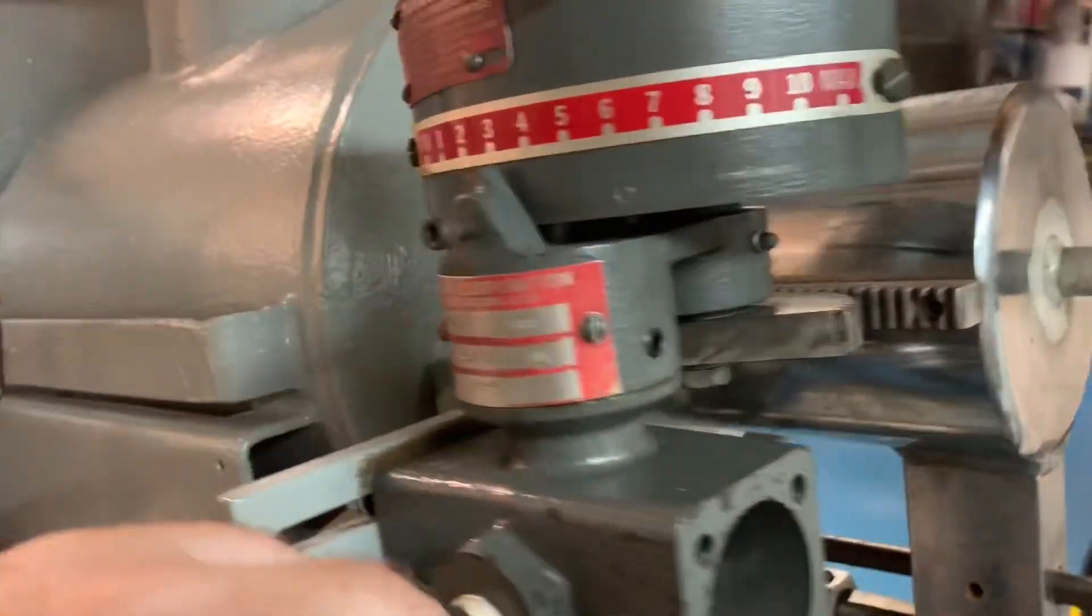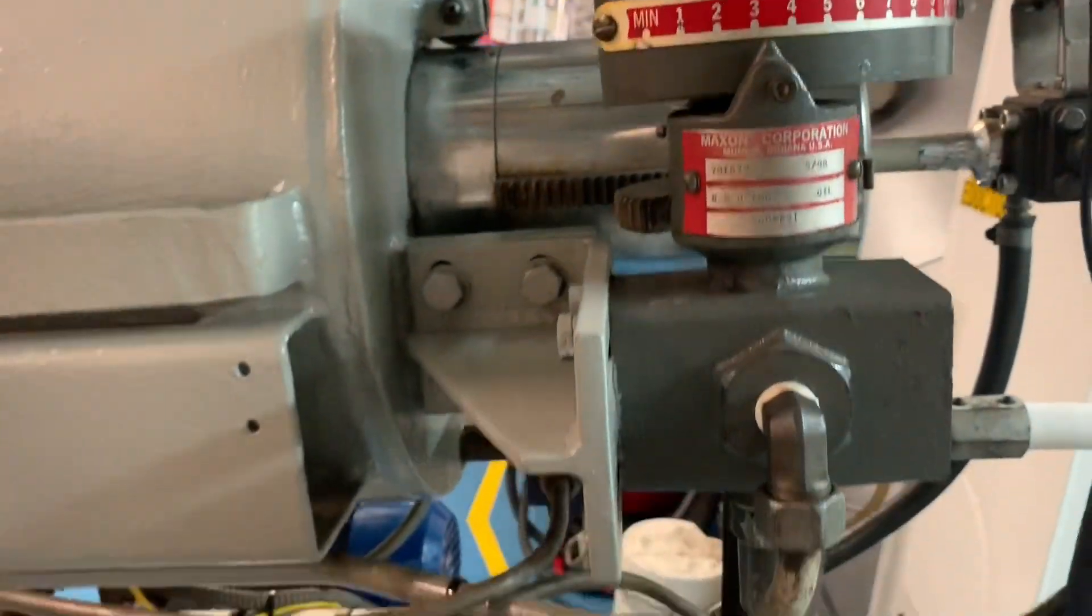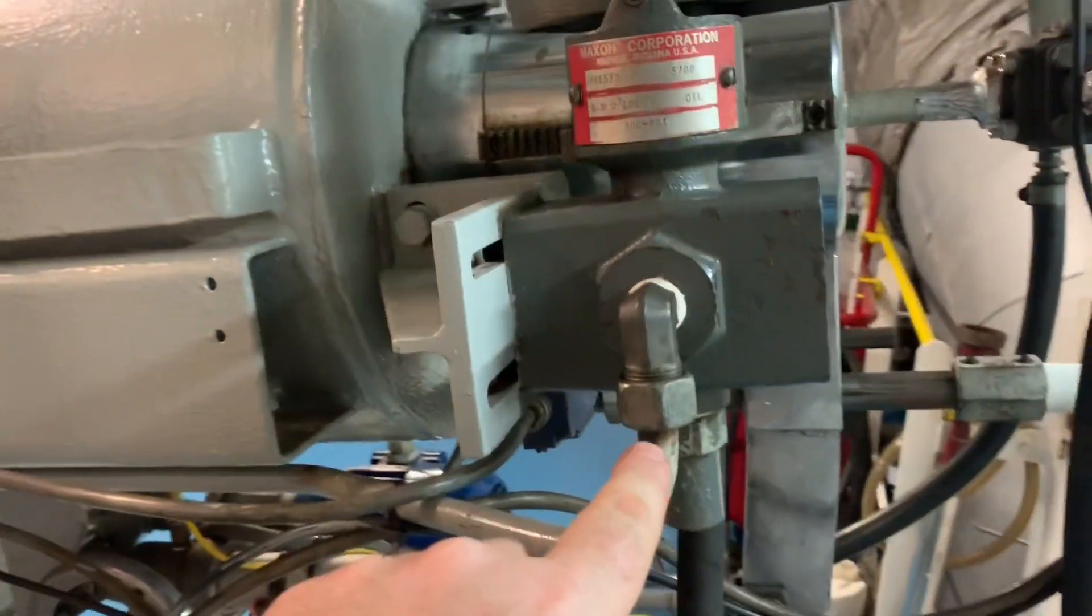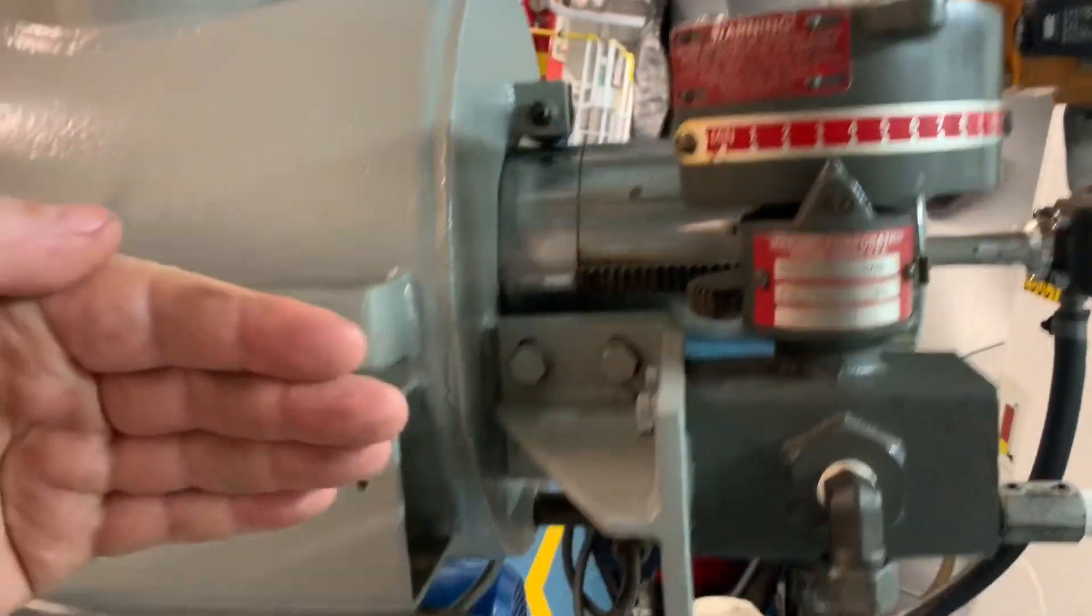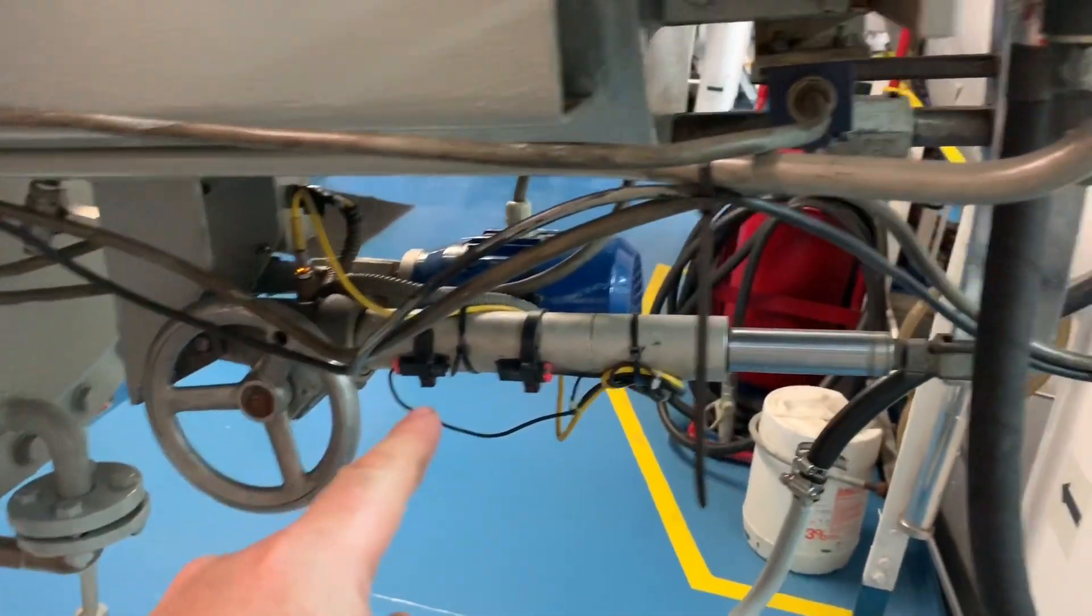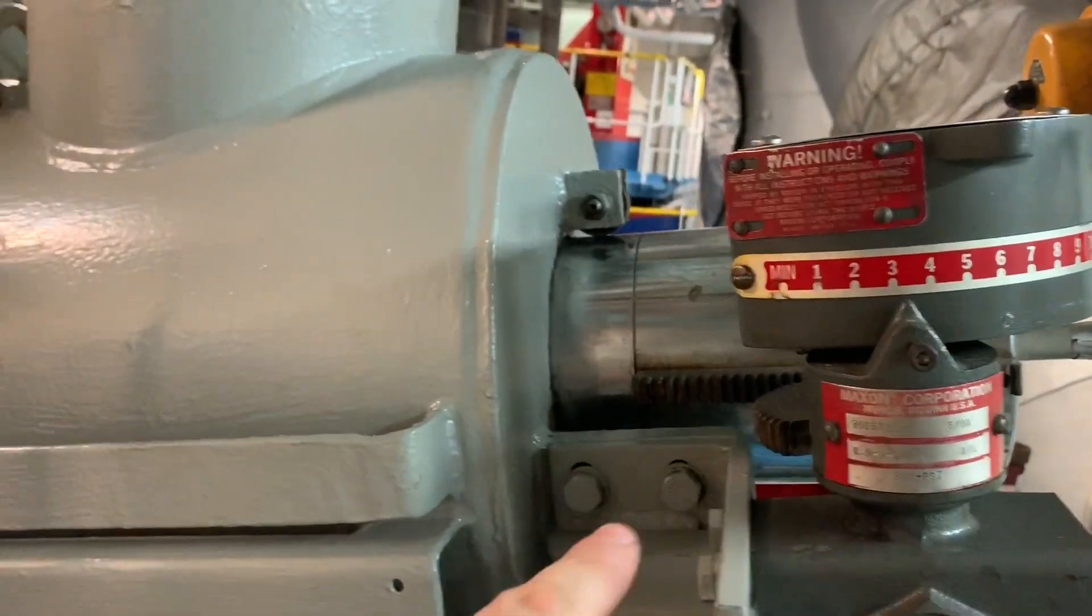So here is the burner assembly, and here is the fuel oil line. And in here is your fuel and your air controls to adjust that. This whole thing slides back and forth on the motor. It adjusts the air. This is fuel.